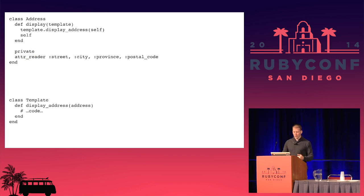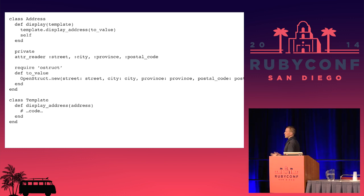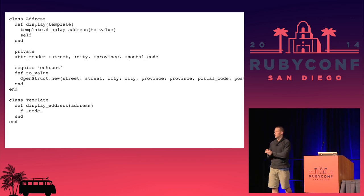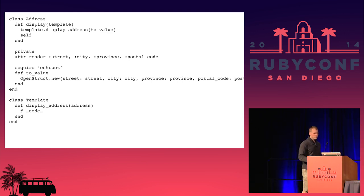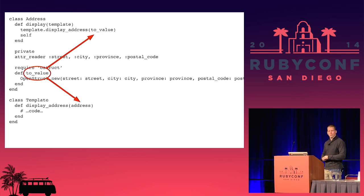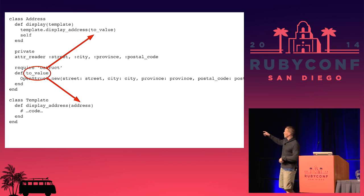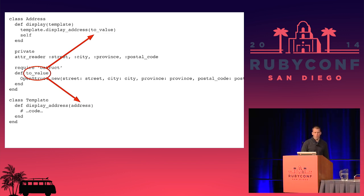Here's something you could do to fix it. We can give the address an ability to provide a value object to the template. If you're not familiar with OpenStruct, it's part of the standard library — you can require it, add a bunch of attributes to the object, and call them just like we do in our template. Instead of passing itself into the display address method of template, it calls toValue, which is also a private method. So a person can never get toValue — no other object can get it unless they go through send and make it ugly.